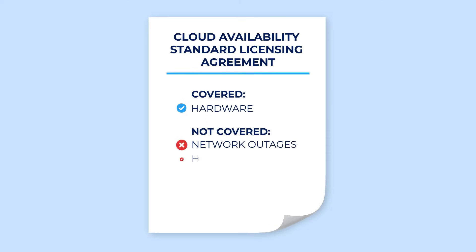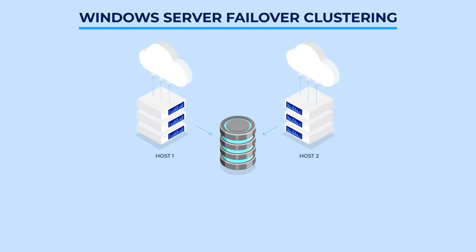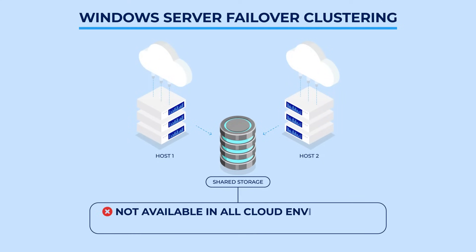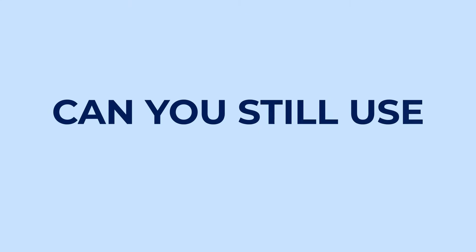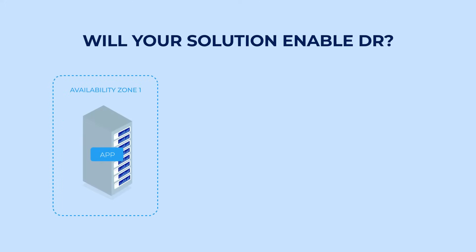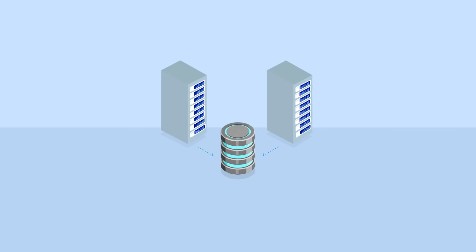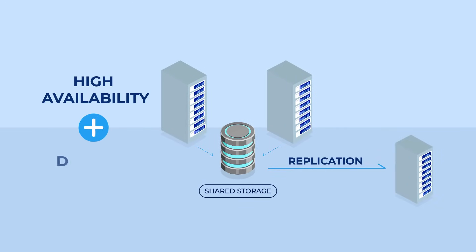Cloud availability SLAs only cover hardware. How do you protect your applications from all of the other reasons for downtime? Moving on-premises Windows Server failover clustering to the cloud requires shared storage, but that may not be practical or even possible in your cloud environment. Can you still use Windows Server failover clustering? DR protection requires failover across availability zones and regions. Will your clustering solutions enable DR? Can you have a combination of cluster failover for HA and replication to a remote node for DR?